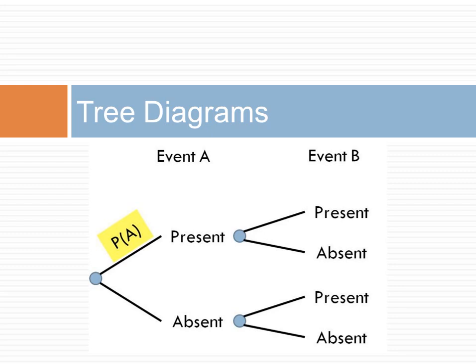If there are only two outcomes possible, the probability of the event not occurring is not shown and can be calculated as 1 minus P of A.